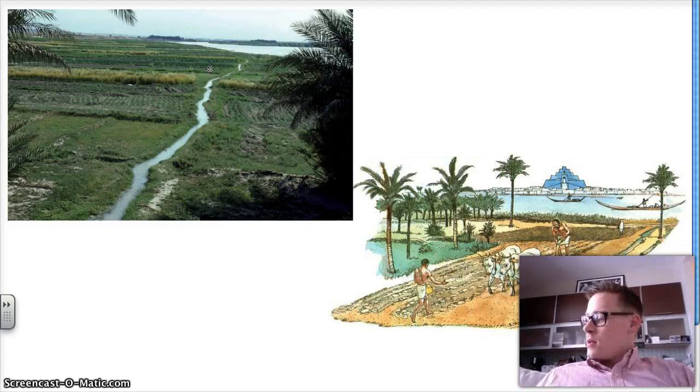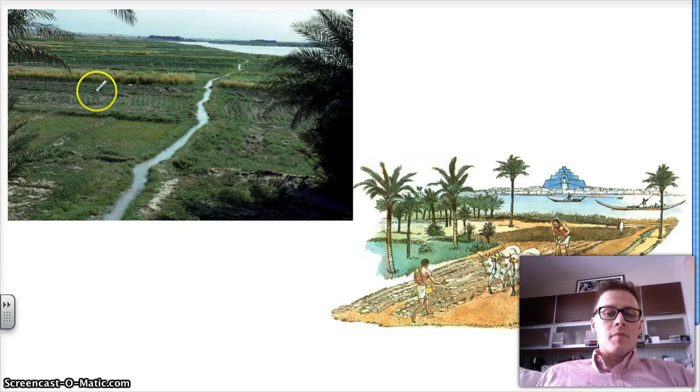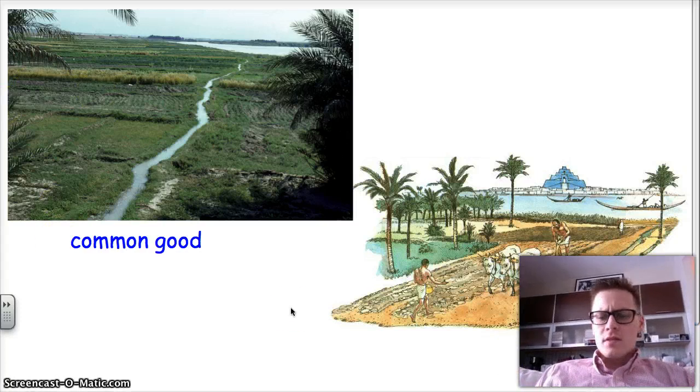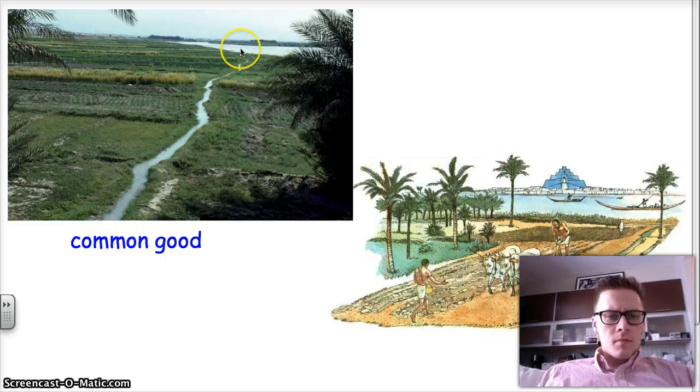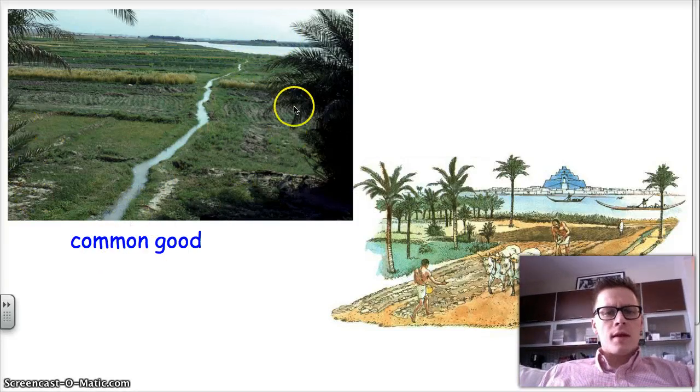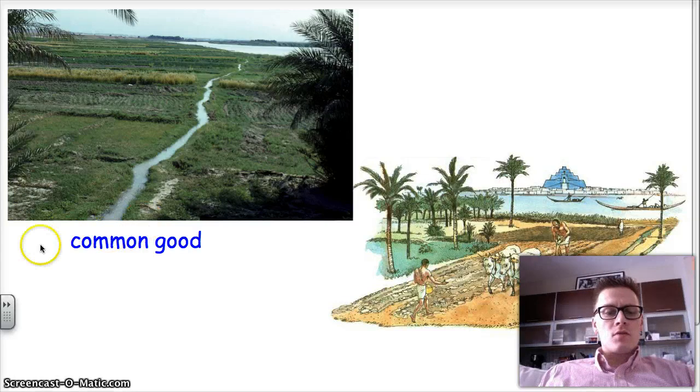When we have something that will benefit everyone, we call that the common good. And what is a common good? Well, a common good is something that everyone benefits from. So all these people that lived around this benefited from this trench that was dug. But they couldn't have done it on their own. They had to do it in common. They had to share that.